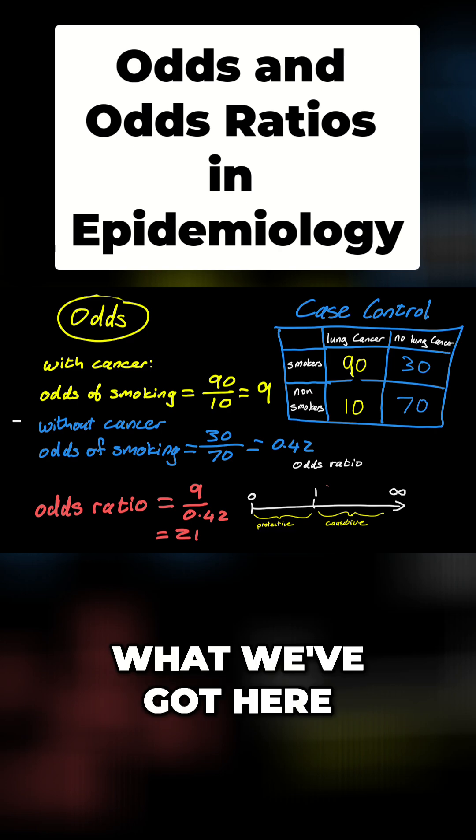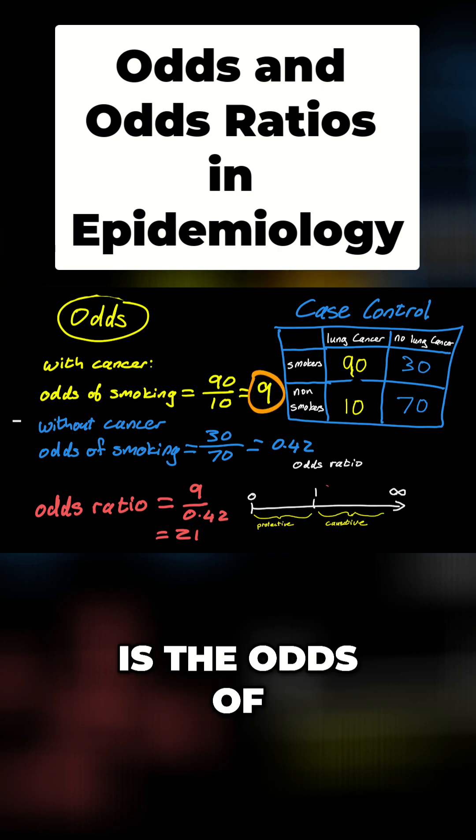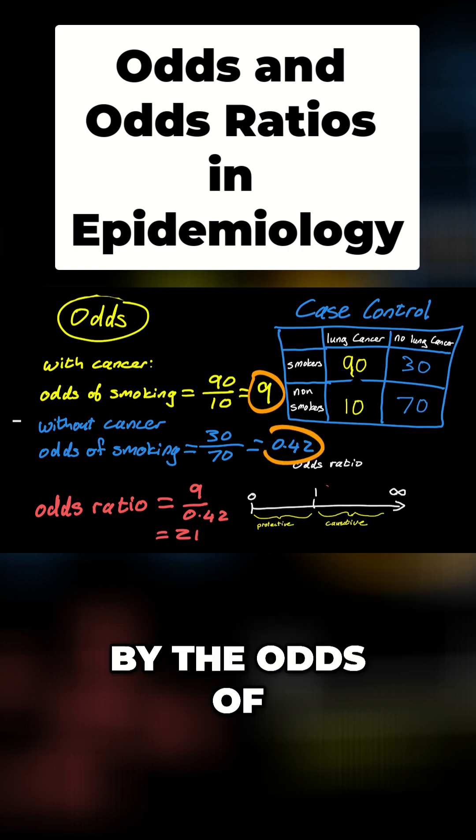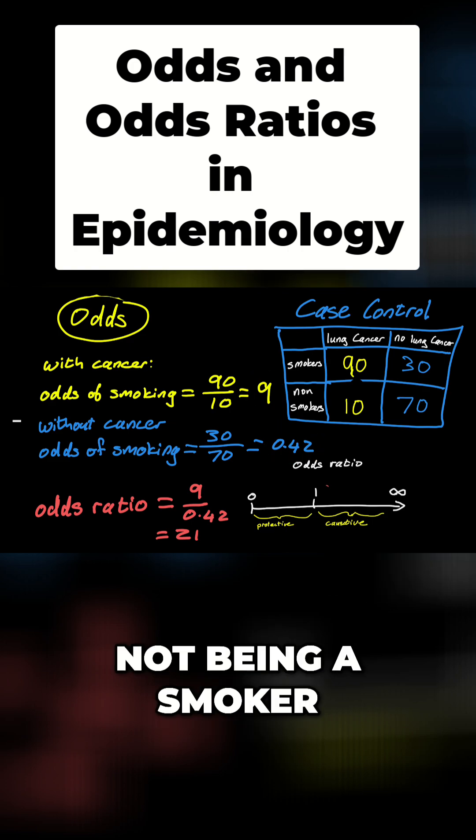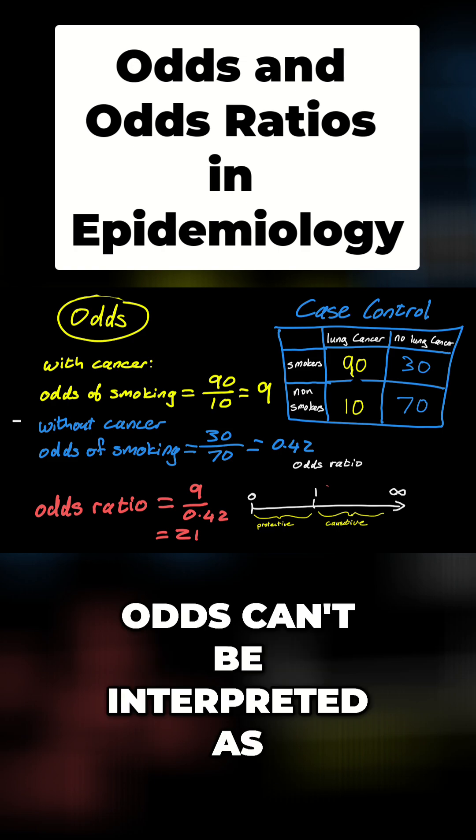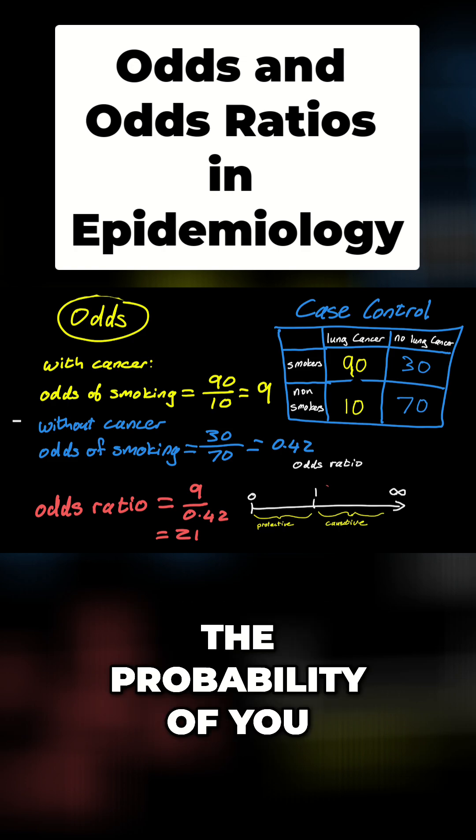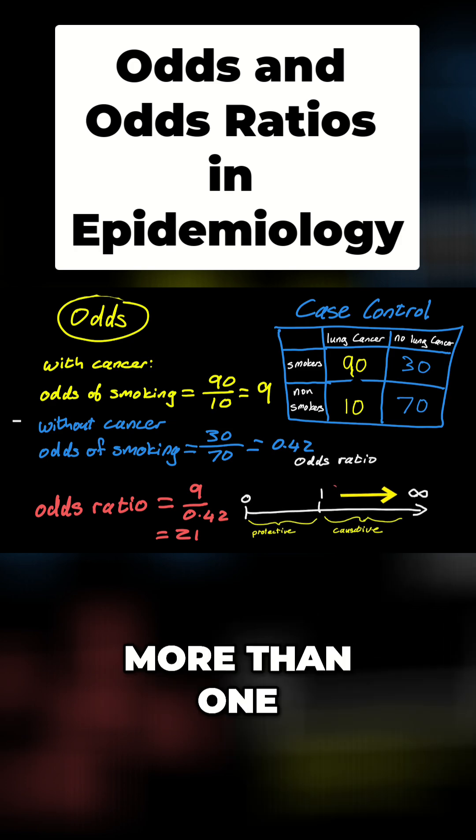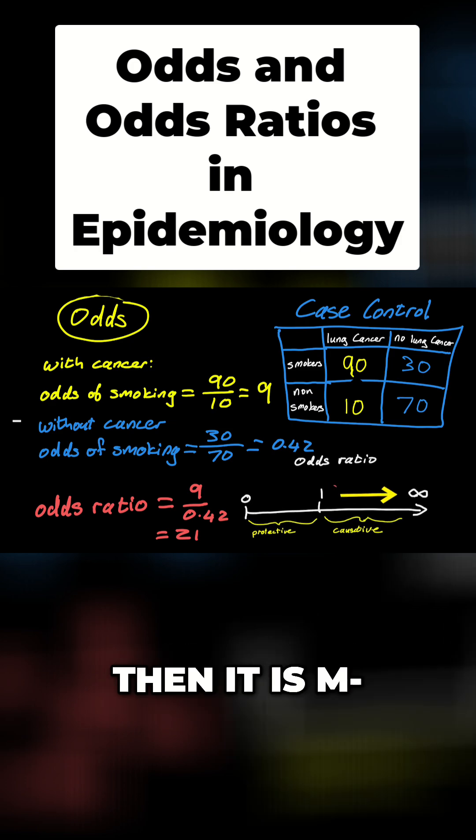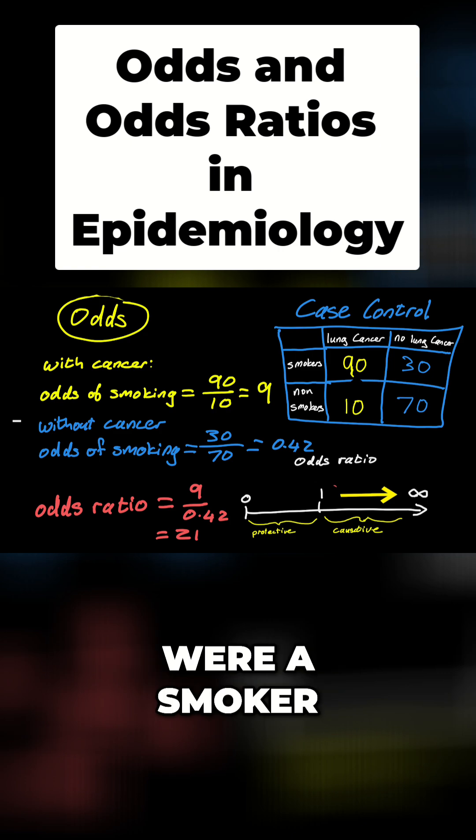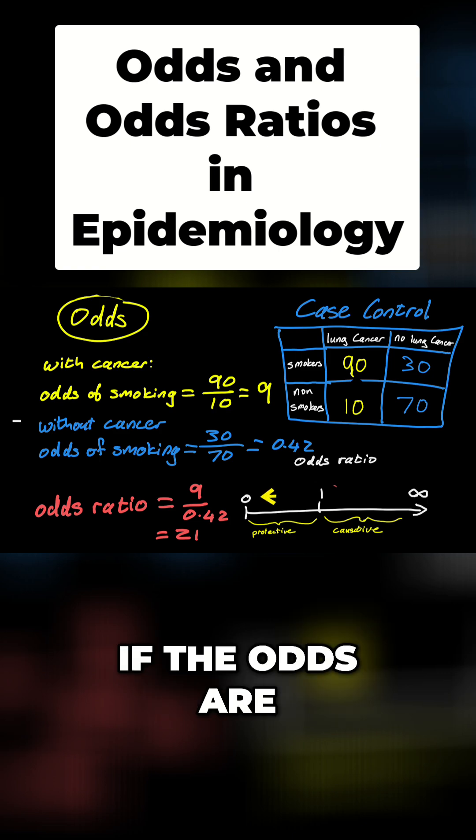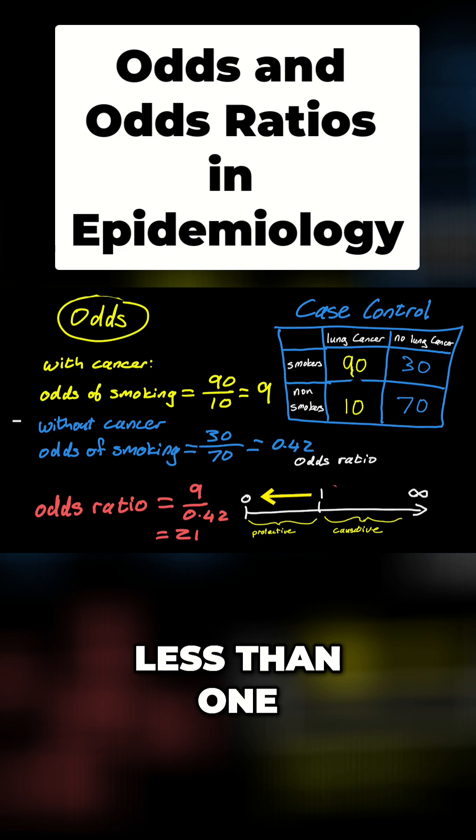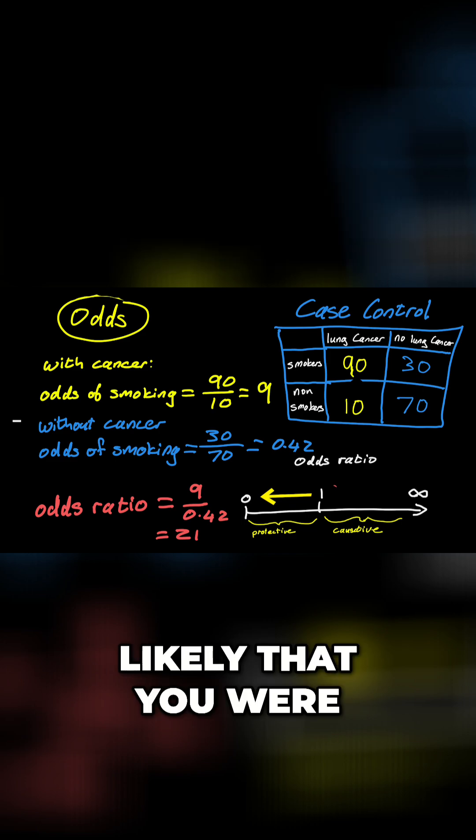Okay. What we've got here is the odds of being a smoker divided by the odds of not being a smoker. Odds can't be interpreted as the probability of you getting lung cancer. All you can say is this: if the odds ratio is more than one, then it is more likely that you were a smoker and you got cancer. If the odds ratio is less than one, then it is less likely that you were a smoker.